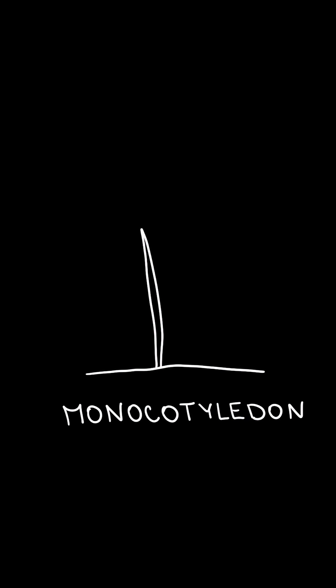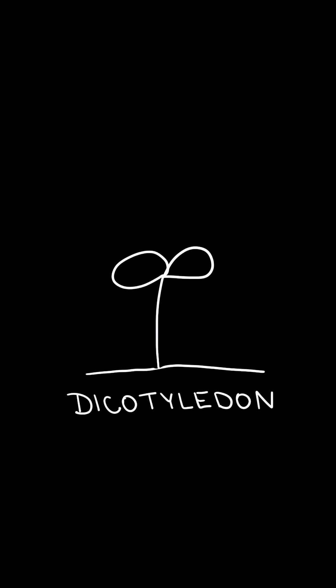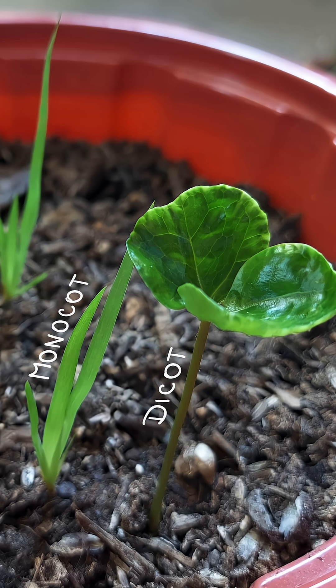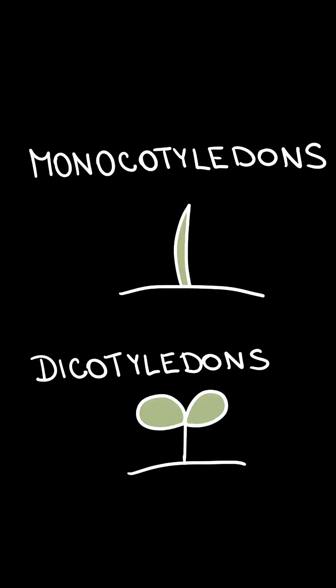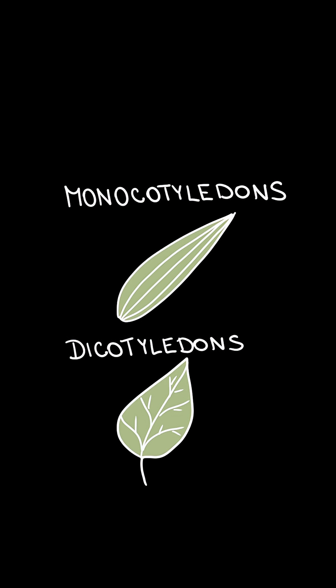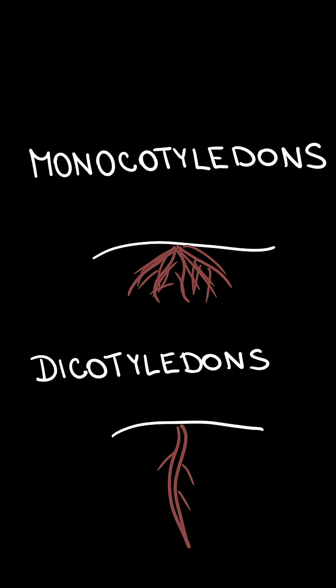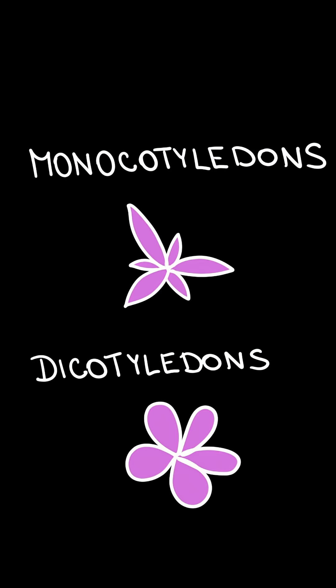The number of cotyledons reveals whether the plant is a monocot or a dicot. Monocotyledons have one embryonic leaf while dicotyledons have two embryonic leaves. Monocots and dicots are two groups into which flowering plants tend to be categorized based on a set of morphological characters such as the number of cotyledons, type of leaf venation, type of roots, or the number of flower parts.